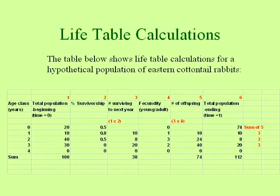Let's descend into the topic of life tables. We see an example life table right here on this image. Notice the names of the columns. We start out with an age class column, and because we're using a hypothetical population of cottontail rabbits here, years are the appropriate age class. We're going from individuals that are less than one year old, an age class of zero, all the way up to four year olds. The next column, which has a red one over it, is the total population at our beginning time — when time equals zero.